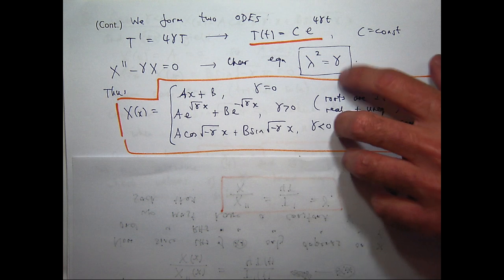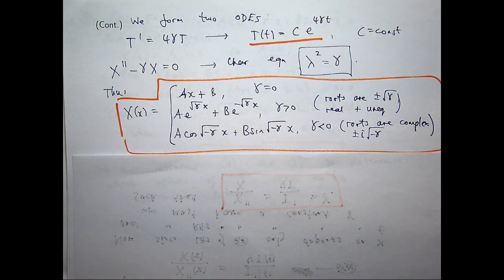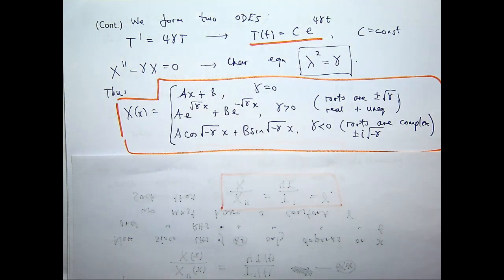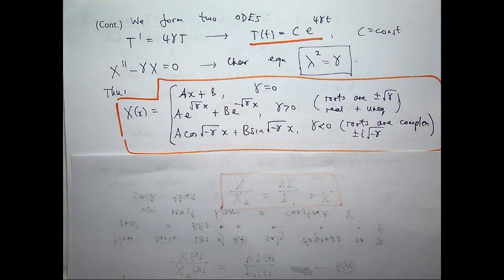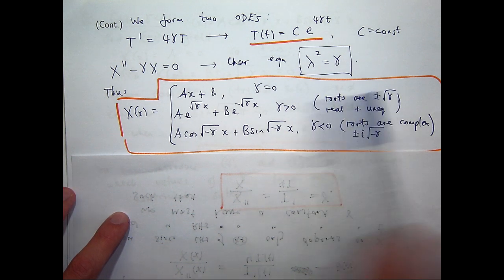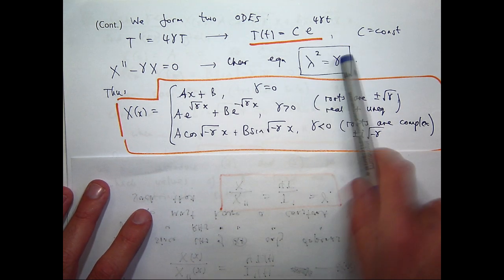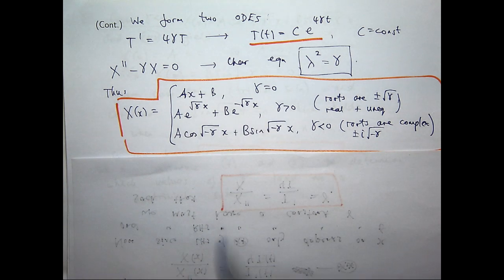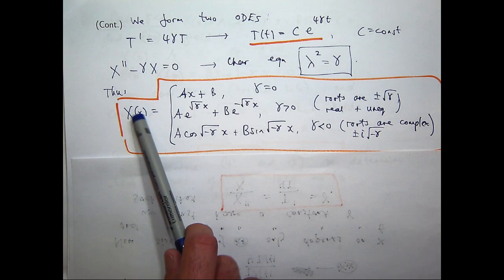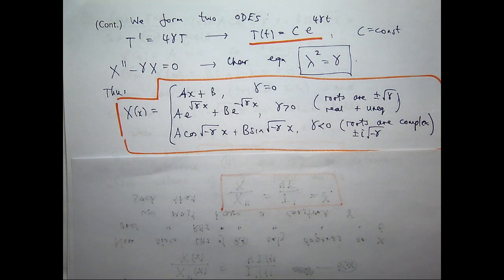There are three cases to discuss. The simplest case is when gamma equals zero — you can solve this directly by integrating, or think of it as the characteristic equation having real and equal roots, giving ax plus b. When gamma is positive, you get real and unequal roots, forming a linear combination of exponential functions. The last case is when gamma is negative — you get complex roots with zero real part, giving a linear combination of sine and cosine. We try to determine the cases that give a non-trivial, non-zero solution — those are the ones we're interested in.